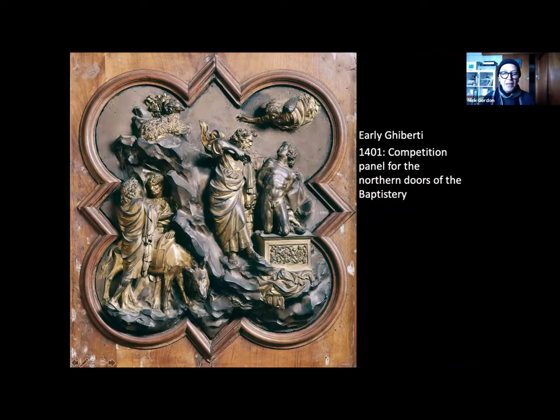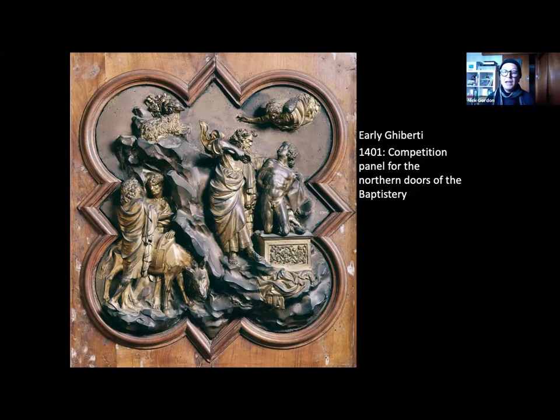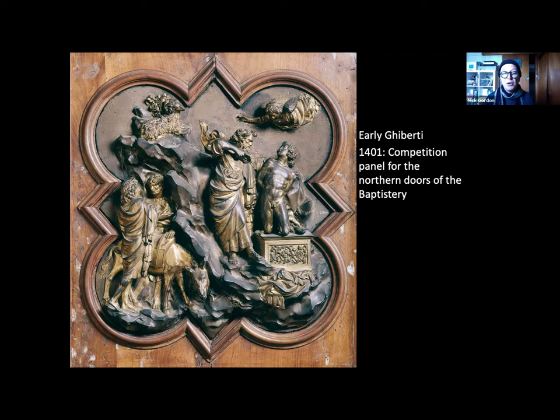If you look at the figure of Abraham, the posture of his body and his head, this slight exaggeration of the curve and motion of his body, this love of the drapery — being able to show the folds of the drapery as they run down, the fringing on his clothing — it's very much coming from an International Gothic tradition, which was the established style when Ghiberti starts to work.